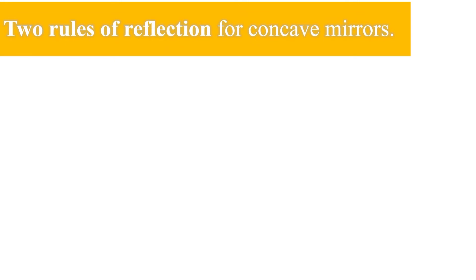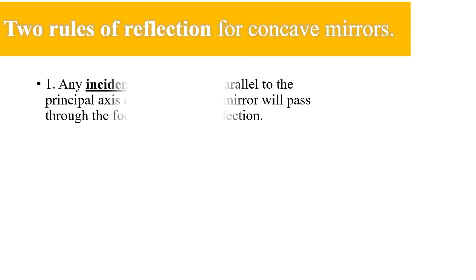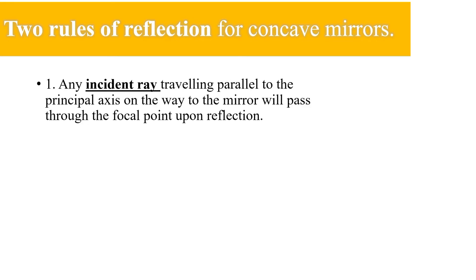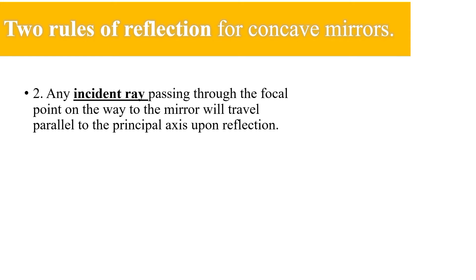The two rules of reflection for concave mirrors. It is important to know these rules because they will guide us for ray diagramming. The first rule: any incident ray traveling parallel to the principal axis on the way to the mirror will pass through the focal point upon reflection. The second rule: any incident ray passing through the focal point on the way to the mirror will travel parallel to the principal axis upon reflection.